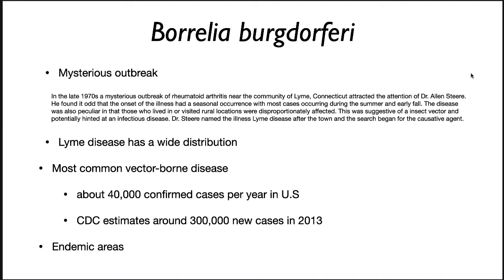After a long and arduous search, they realized it was a spirochete named Borrelia burgdorferi. It turns out Lyme disease has a wide distribution — it's in North America, it's in Europe, and in other places. It is the most common vector-borne disease in the United States, with about 40,000 confirmed cases per year in the U.S. The CDC estimates around 300,000 new cases are found each year.